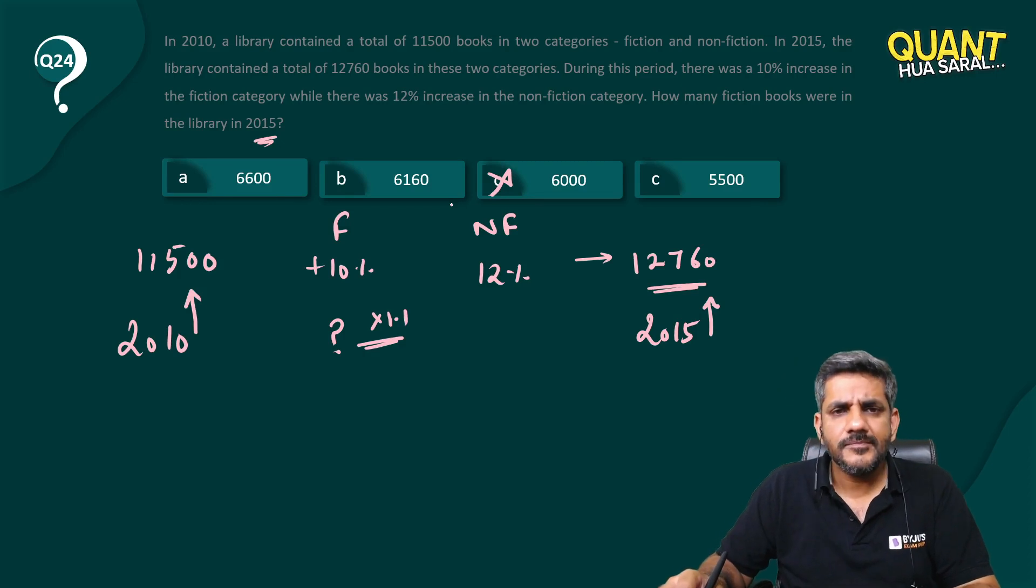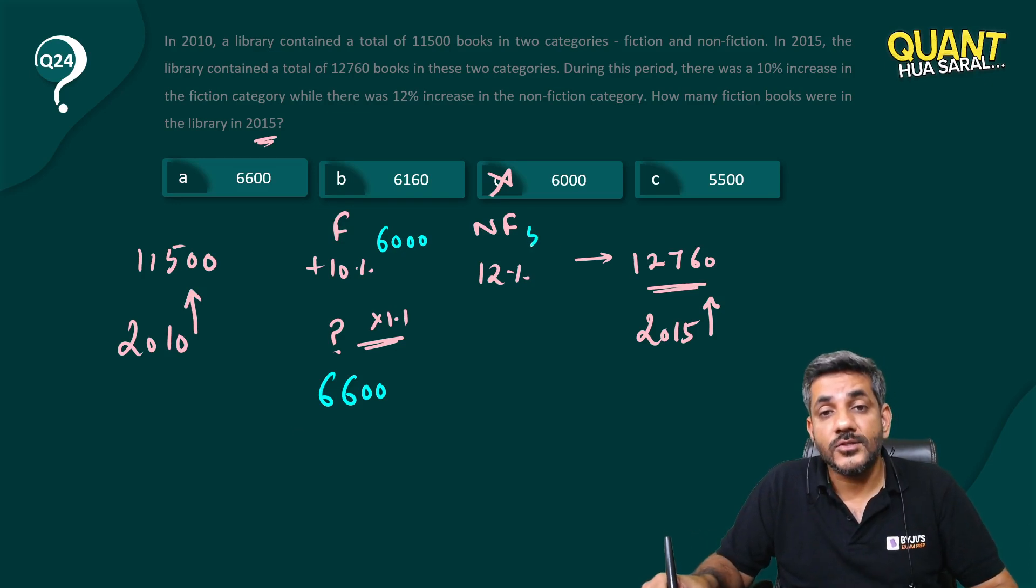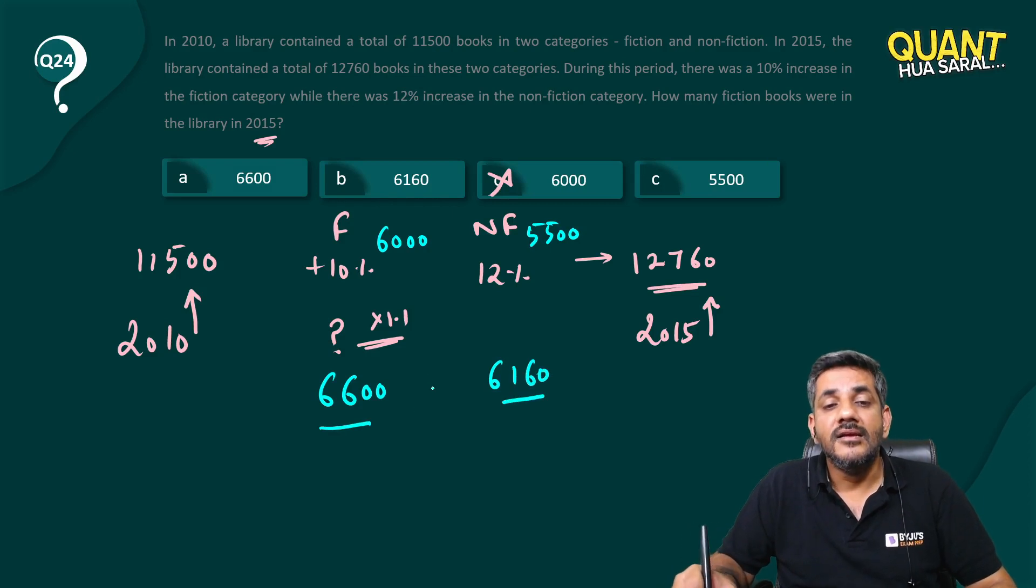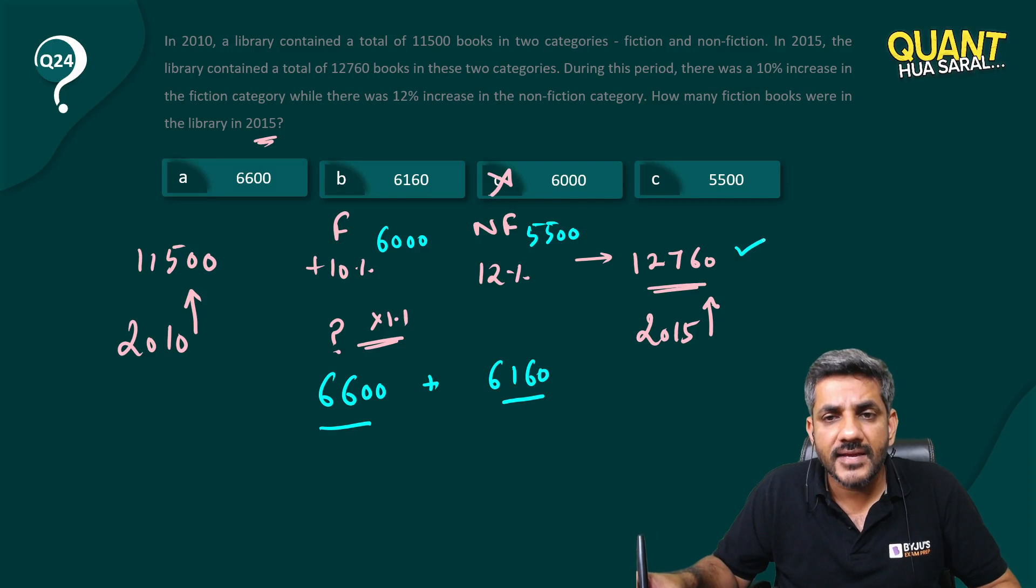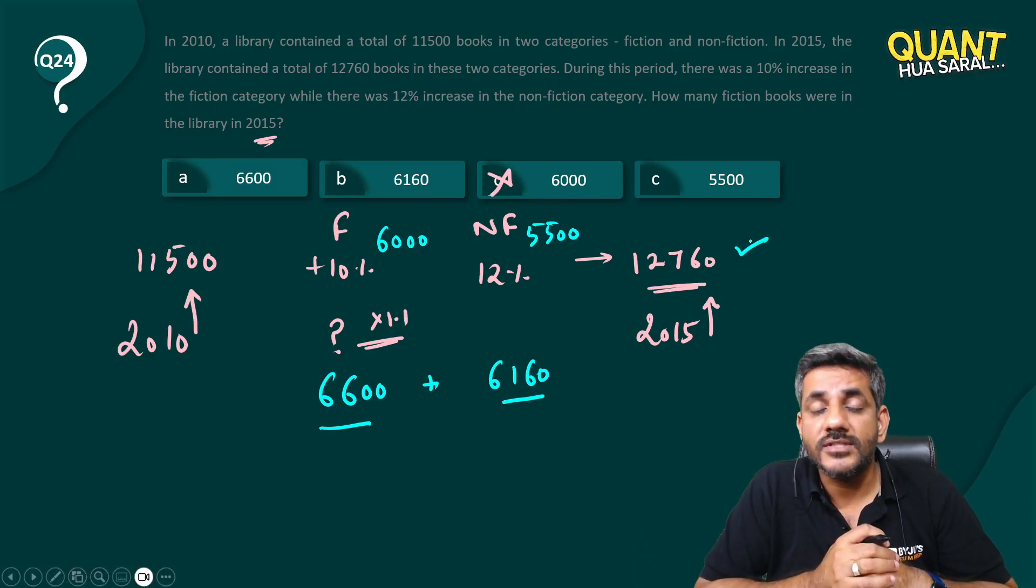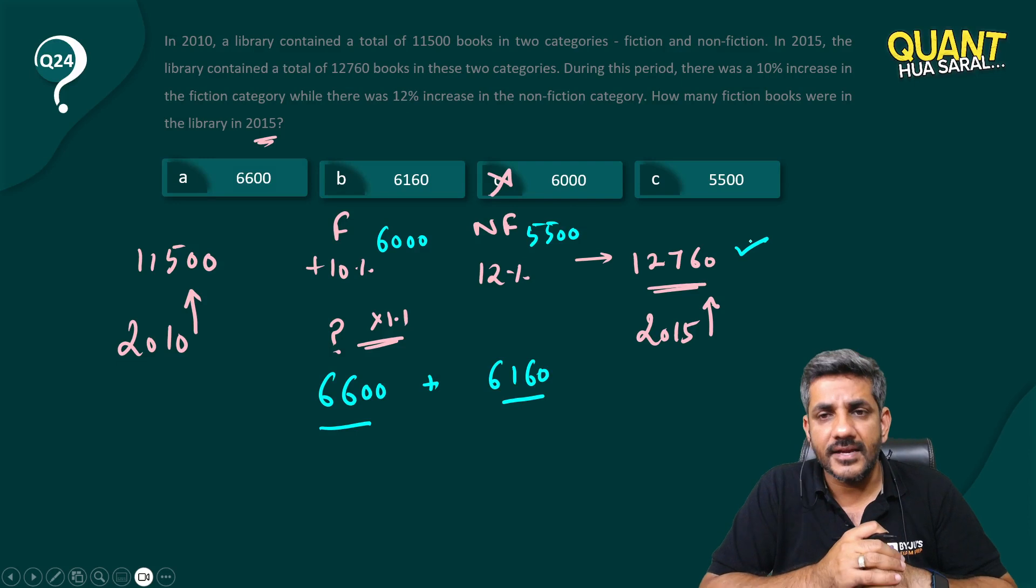About others, I would say, let's suppose it is 6,600. If the new figure is 6,600, which is 1.1 times, that means previously it was 6,000. And if this was 6,000, this was 5,500. 11,500 minus 6,000. And if this was 5,500, it has increased by 12%. What is 12% of it? It is 660. When I add them, it becomes 6,160. Fortunately, 6,600 plus 6,160 straight away gives me the answer as 12,760. I can say 6,600 is the right answer.